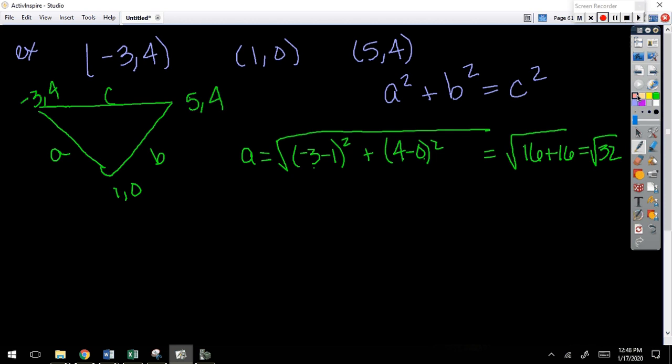Okay, find side B. Y'all be working it on your paper. I'm going to work it quietly up here so I don't give you the answer, then you can look up and check your work. What do you notice? They're the same. So that tells me it's an isosceles, but I don't know if it's a right triangle yet or not.